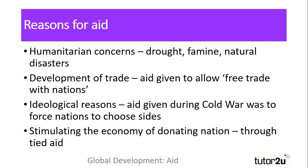Aid is also used to stimulate the donor economy through what's called Tied Aid. Tied Aid is aid given on the condition that it is spent in the donor nation — a very common form of aid that forces developing nations to select how their aid will be spent from a list of approved suppliers and industries in the donor nation.